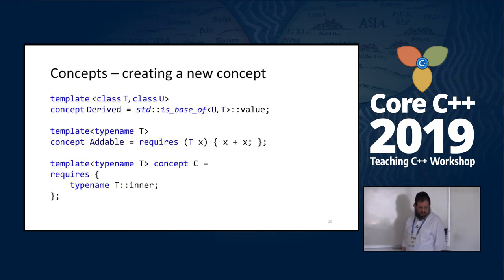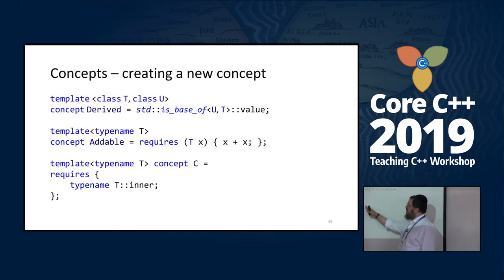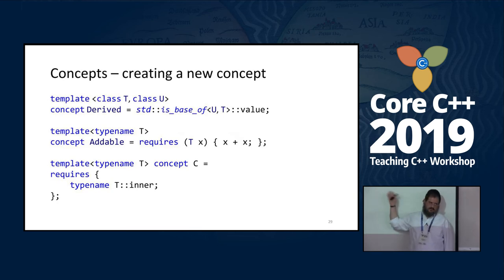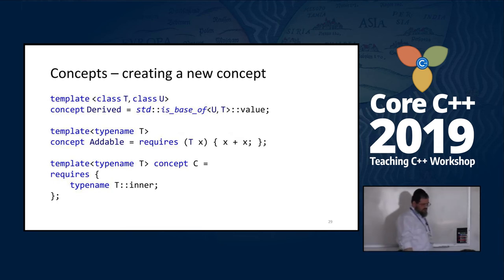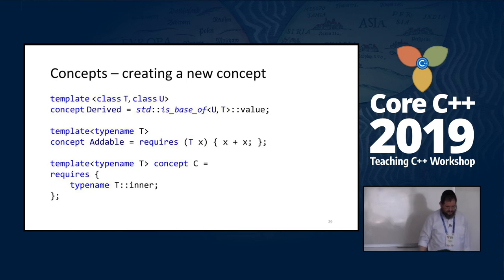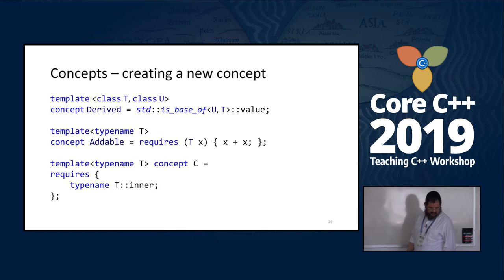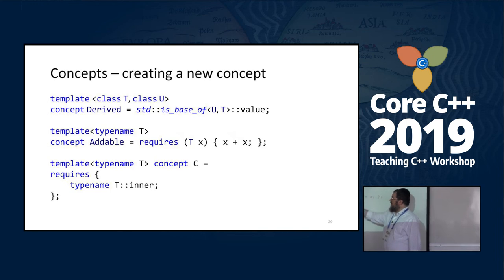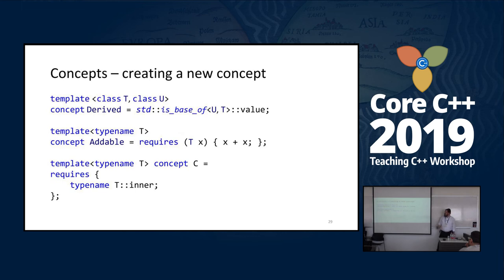And how do we create a new concept? It can be very simple: just 'concept' equals a boolean condition we want. If we want something more complicated, we can use 'requires' — it's like asking: does this expression compile? If it compiles, okay. If not, this is not the type we are looking for.